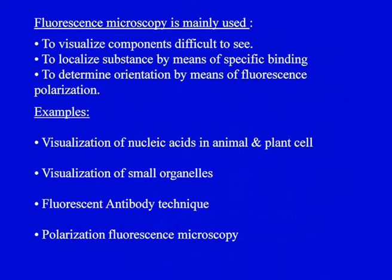Another important application is polarization fluorescence microscopy to determine orientation. The angle of polarization of fluorescence with respect to the DNA helix axis can be deciphered if you know the plane of polarization of a fluorescent dye. For example, if you know the plane of polarization of acridine orange, which intercalates between DNA base pairs, you will be able to know the orientation of the DNA helix as well. This has been used to find the orientation of the DNA molecule with respect to chromosomes.